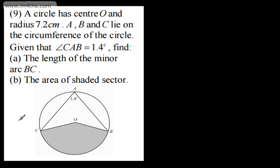So here's our circle. We've got A, B and C. We've got a centre and we've got the angle CAB is 1.4 radians. For this particular question, we need to use circle theorem to find this angle right here. Angles at the centre are double that at the circumference, so this angle right here is going to be 2.8 radians.